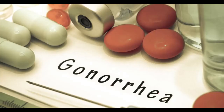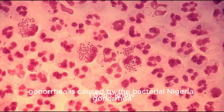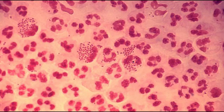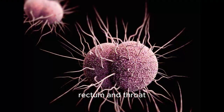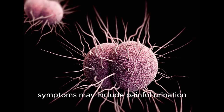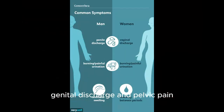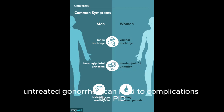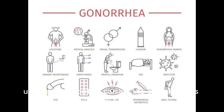2. Gonorrhea, another bacterial infection, is caused by the bacterium Neisseria gonorrhea. It commonly affects the genital tract, rectum, and throat. Symptoms may include painful urination, genital discharge, and pelvic pain. Untreated gonorrhea can lead to complications like PID, infertility, and joint problems.